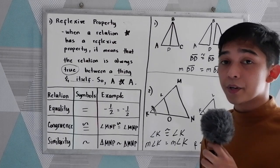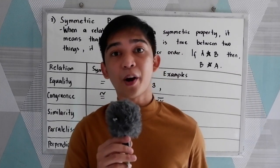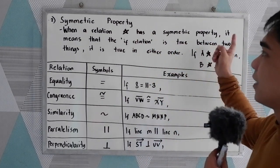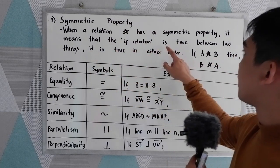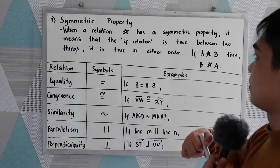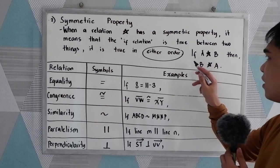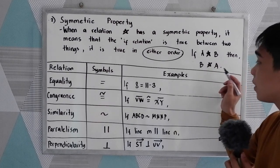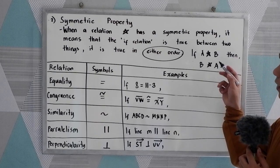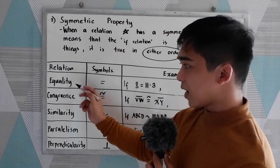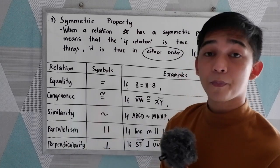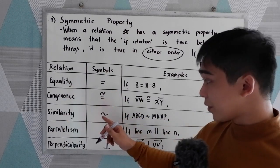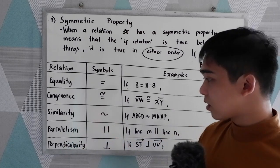Now let's have our second property: the symmetric property. When a relation has a symmetric property, it means that if the relation is true between two things, it is true in either order. So if A has an unknown relation to B, then B has an unknown relation to A. Our different relations include equality, congruence, similarity, parallelism, and perpendicularity, each with their corresponding symbols.